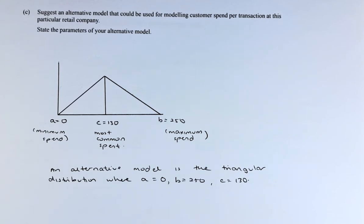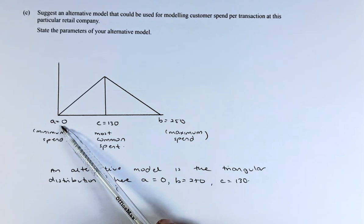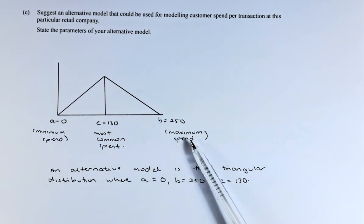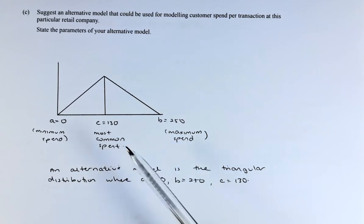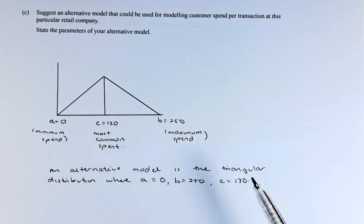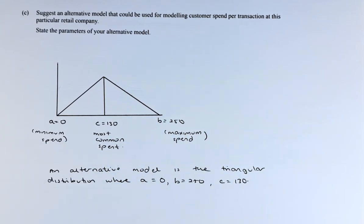The other possible distribution - it could not be binomial, it could not be Poisson - it has to be a triangular distribution. A triangular distribution looks like that: A is the starting point where the minimum spend is $0, the maximum spend B is $2.50, and the highest spend or the most common spend C is $1.30.